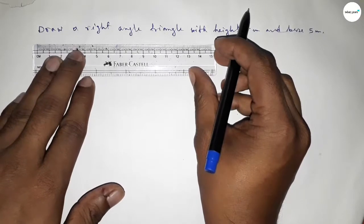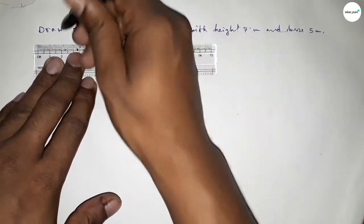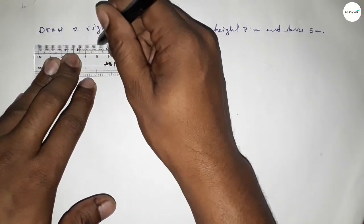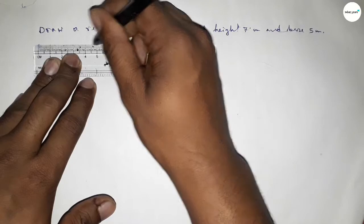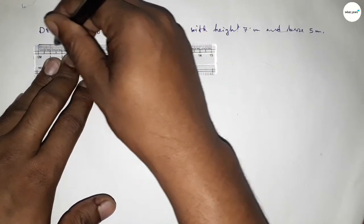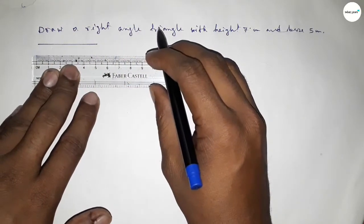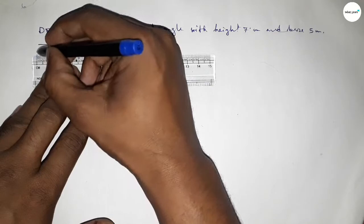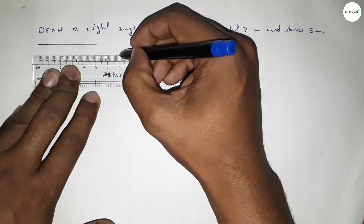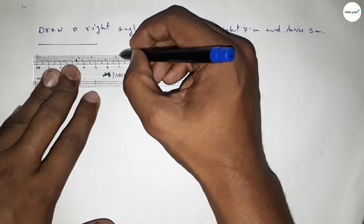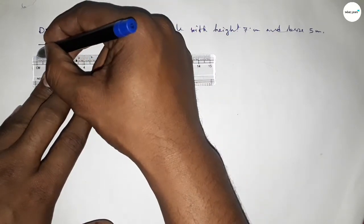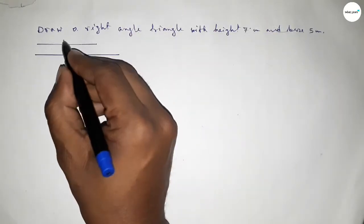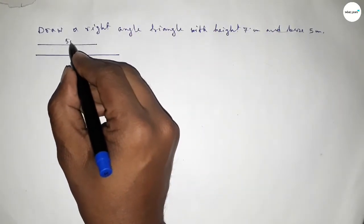First of all, we have to draw a line of length 5 centimeter and another line of length 7 centimeter, starting from zero. This side is 5 centimeter and this side is 7 centimeter.